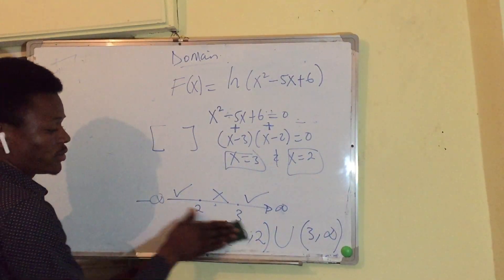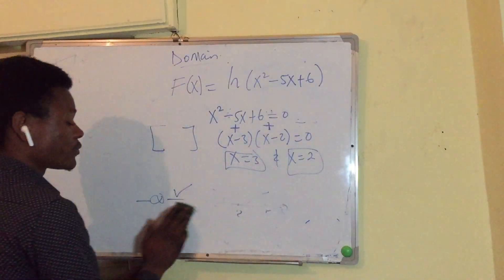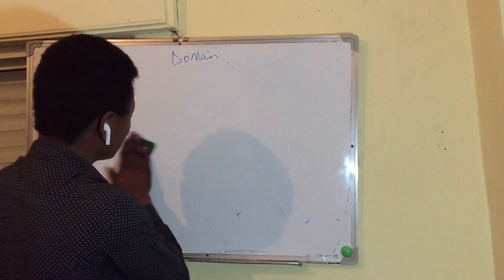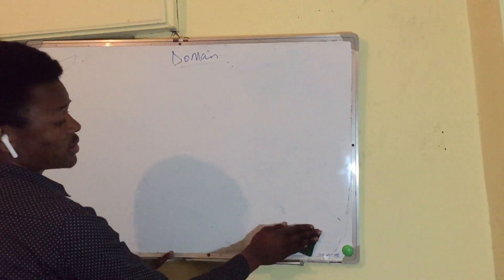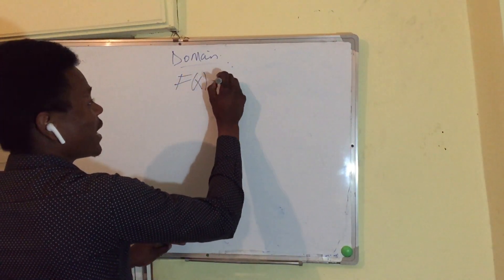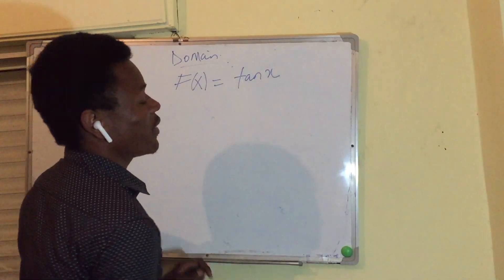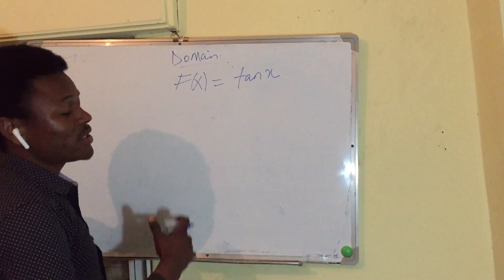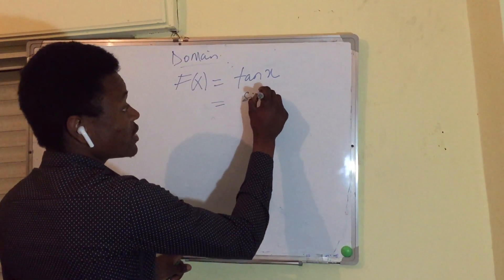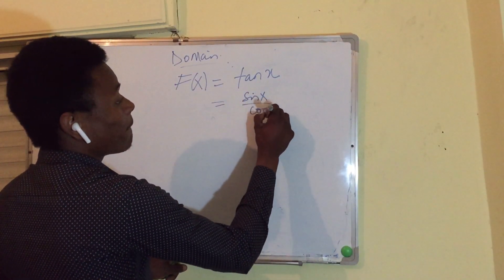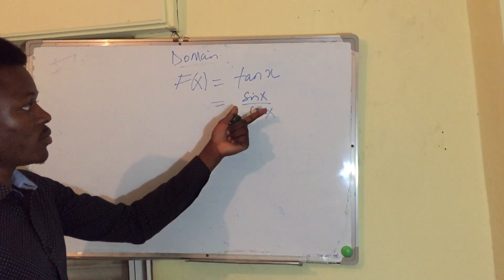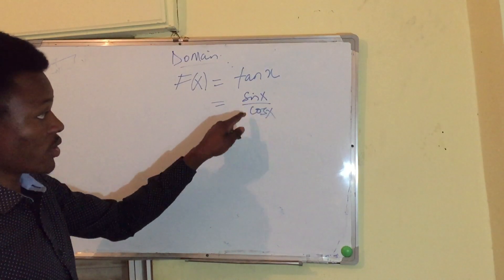So that is easy, right? Unless you need the domain of a function. Let me try one more example. If f(x) = tan(x), what is the domain? Since tan(x) = sin(x) / cos(x), we need to avoid division by zero.